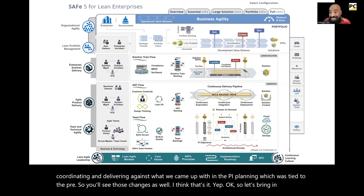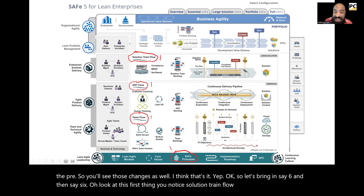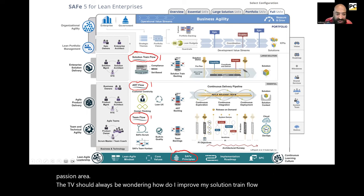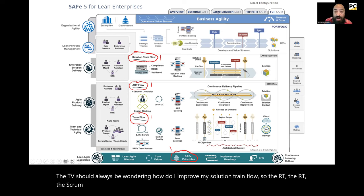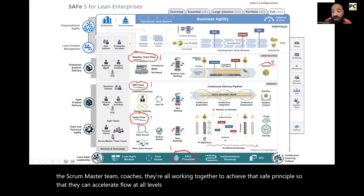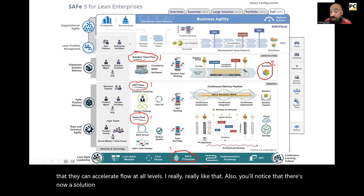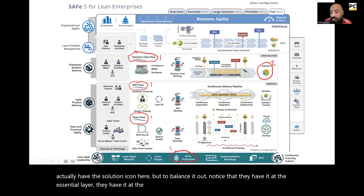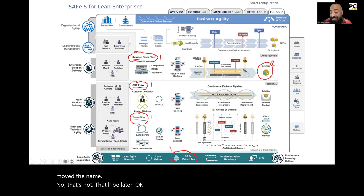So let's bring in SAFe 6. Oh, look at this — first thing you notice: solution train flow and the STE. As a passion area, the STE should always be wondering how to improve their solution train flow. The RTE, the SCRUM Master Team Coaches — they're all working together to achieve that SAFe principle to accelerate flow at all levels. Also, you'll notice there's now a solution icon over here; there wasn't one in SAFe 5. To balance it out, they have it at the essential layer and at the portfolio layer. So they added 'solution' here as well.